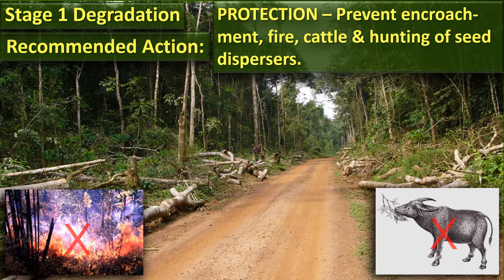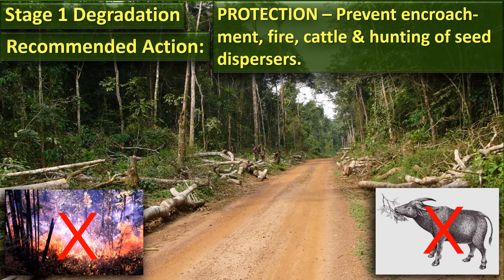So what to do with these areas? Really, protection is all that is necessary. We need to prevent encroachment, because if you don't, these sites will slide down to stage two or stage three degradation. We need to keep out fire, and to keep out or at least control the numbers of cattle, because they will eat the regenerating seedlings. And we need to ensure there's no hunting of those essential seed-dispersing animals that bring in seeds of tree species from the surrounding remnant fragments of forest.